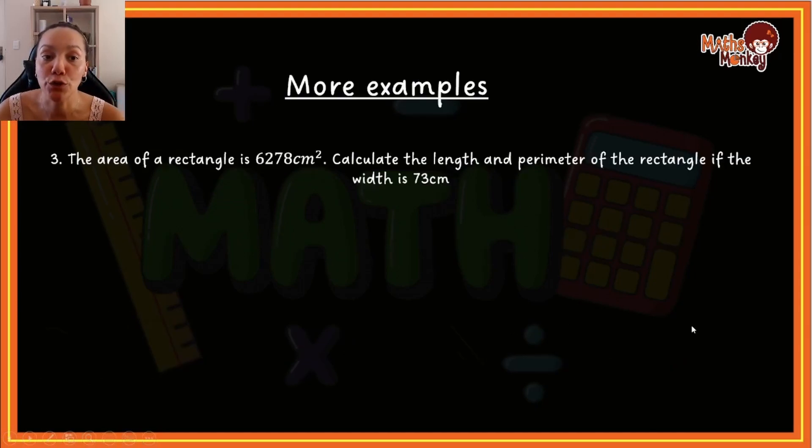Now let's move over to the third example. The area of a rectangle is 6,278 centimeters squared. This is the last example. Calculate the length and the perimeter of the rectangle if the width is 73 centimeters. So now what you know is you want to substitute in the values that you know. They've given us the area, and then we have length times 73, which they also gave you.